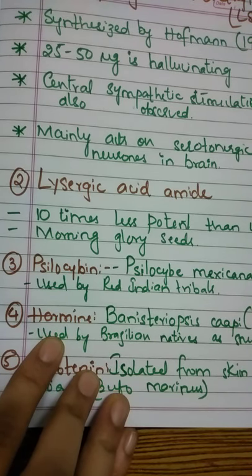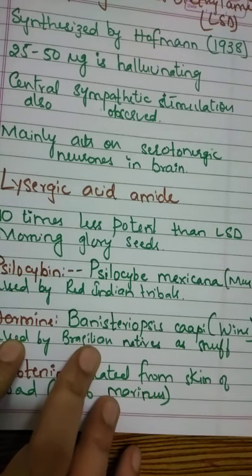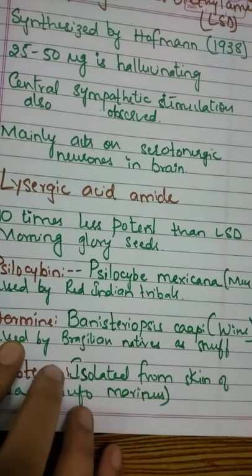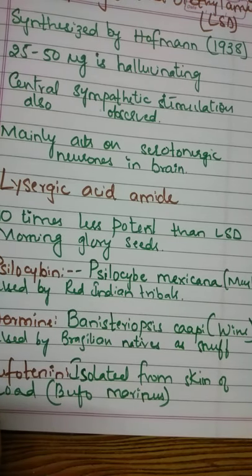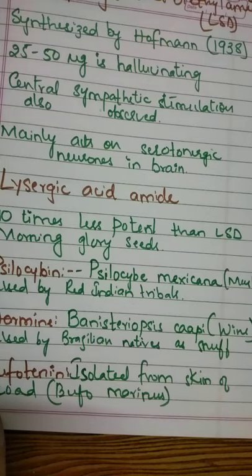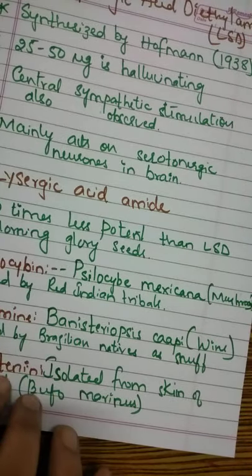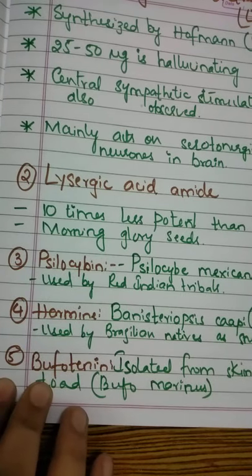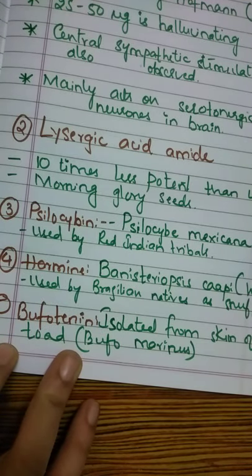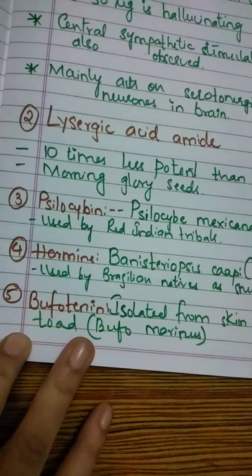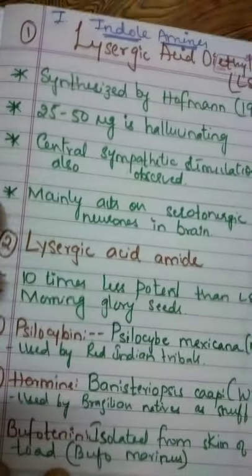Another hallucinogen is harmine, which is present in the wine made from Banisteriopsis caapi. It is mainly used by Brazilian natives and has been taken in the form of snuffs. Another drug is bufotenine, which is isolated from the skin of a toad called Bufo marinus.